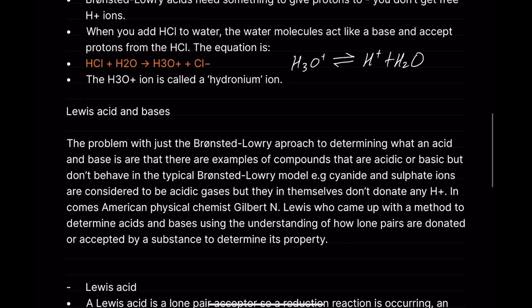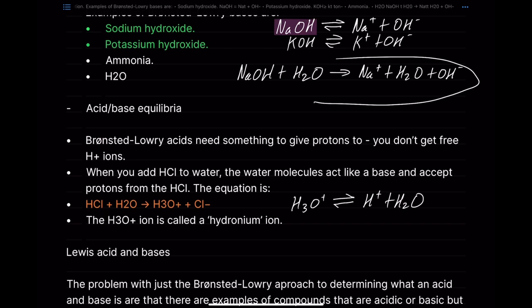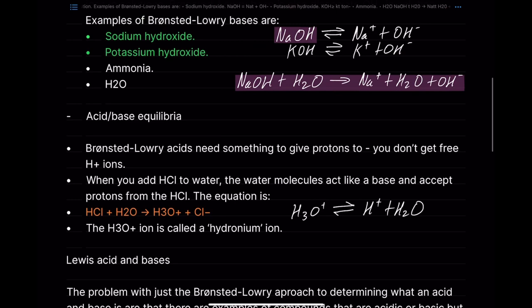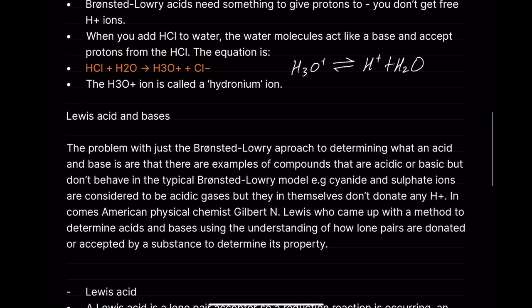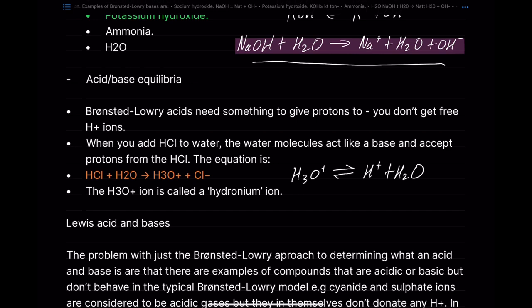Lewis acids and bases. The problem with the Bronsted-Lowry approach is that there are examples of compounds that are acidic or basic but don't behave in a typical Bronsted-Lowry model. For example, cyanide and sulfur ions are considered to be acidic gases, but they don't donate any protons themselves. That's why we also have the Lewis acid-base model.